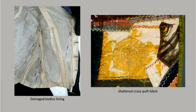Cheap weighted silks were used in abundance for garment linings and can be easily identified by a characteristic shattering pattern, as seen here. Pieces of weighted silk can also be found in 19th century crazy quilts and exhibit the same type of damage. The fabric loss could have been much more extensive had it not been for the embroidery within the block of this quilt.